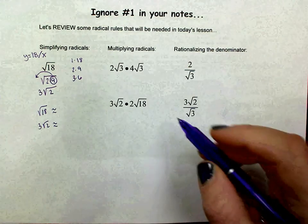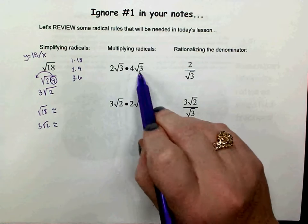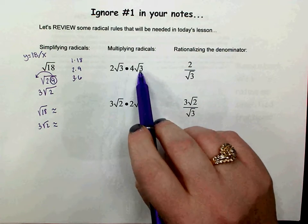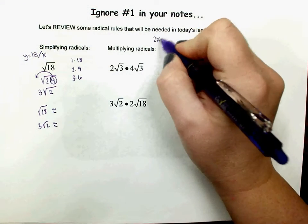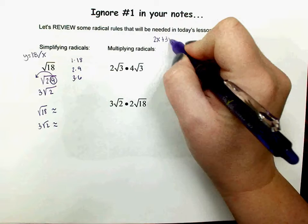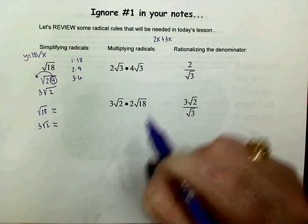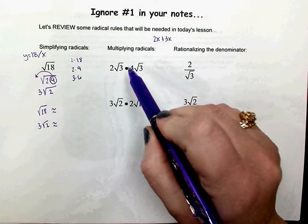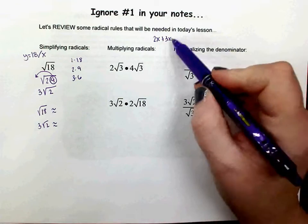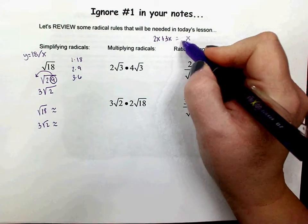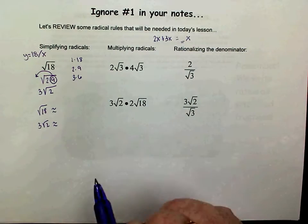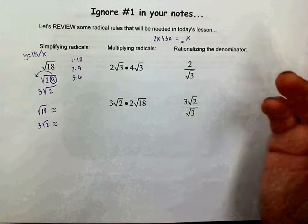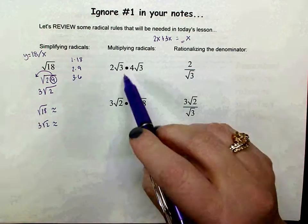When you're adding, you can only add them if they have like terms. I would be able to add these because they're both a square root of 3, just like I can add 2x and 3x since they both have an x. If this was a plus sign, I would still have a square root of 3 — I would just need to know how many I have, which would be 6 if that was addition.